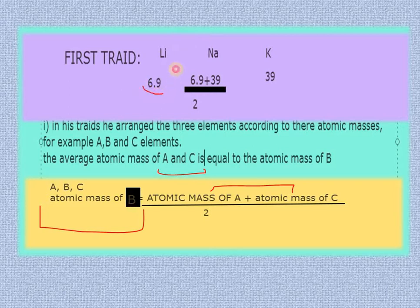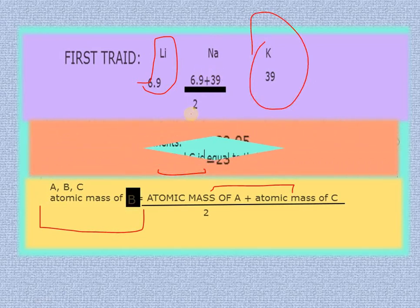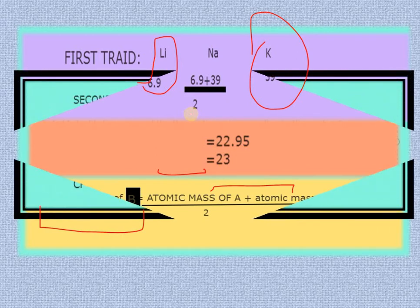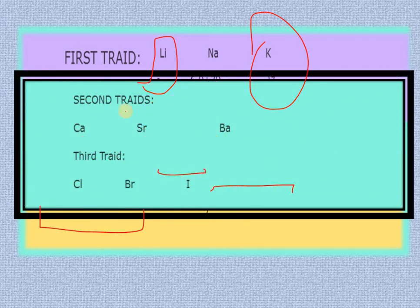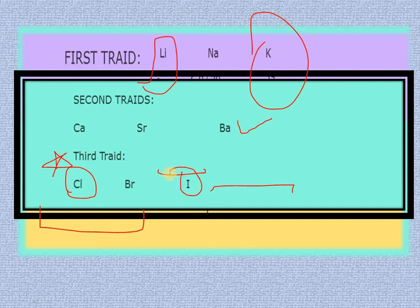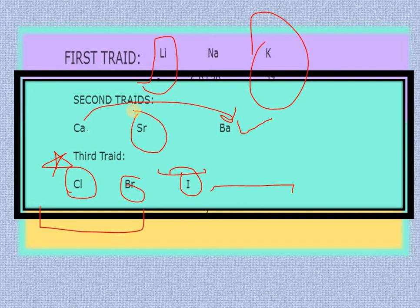Lithium's mass is 6.9 and potassium's mass is 39. So sodium's mass is 6.9 plus 39 divided by 2, which gives 22.9, approximately 23. The next triad was calcium, strontium, and barium. The same rule applies for the third triad, where chlorine, bromine, and iodine are used — chlorine and iodine mass divided by 2 gives the mass of bromine. The average atomic mass of the first and last element equals the atomic mass of the middle element.